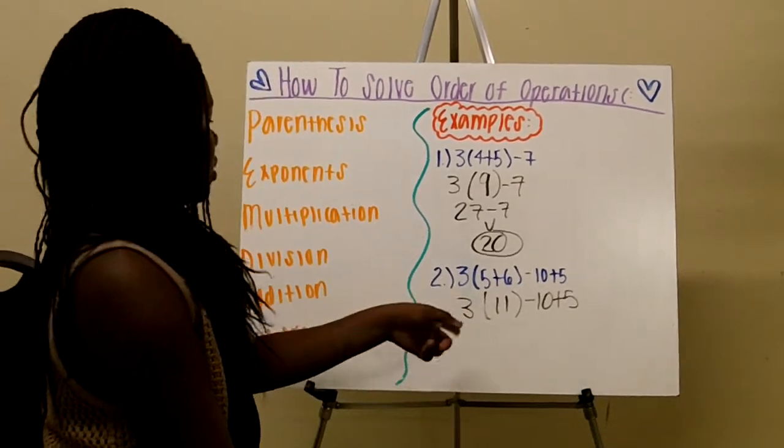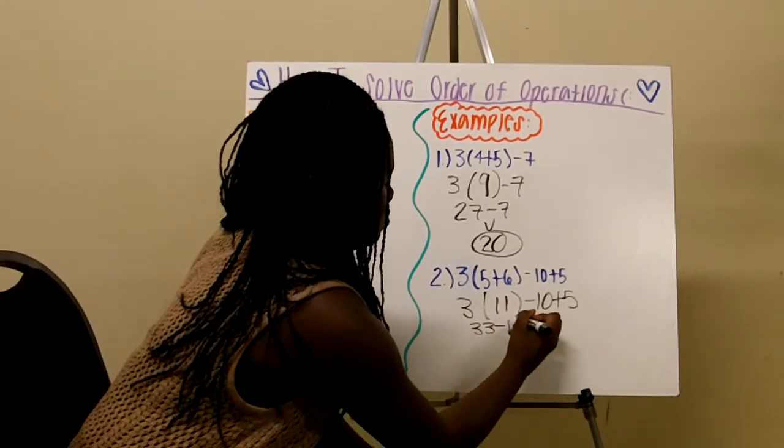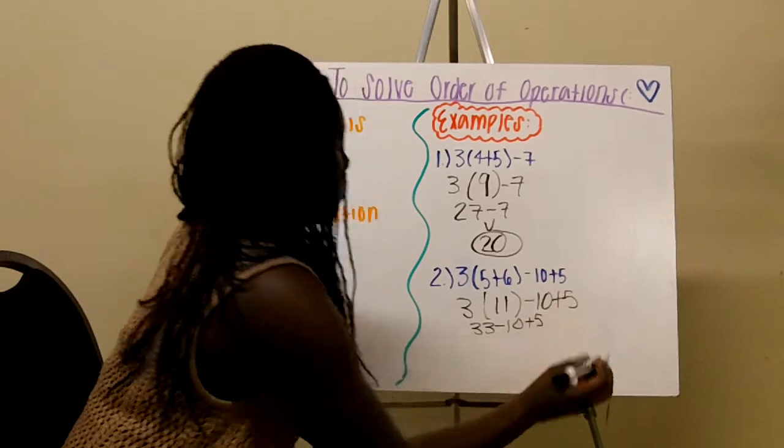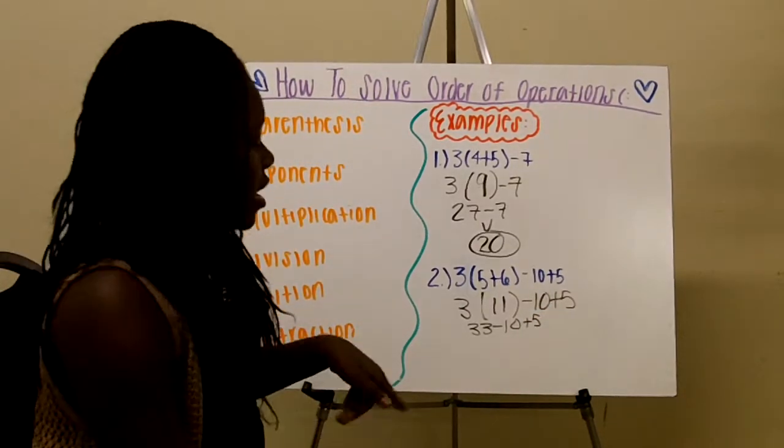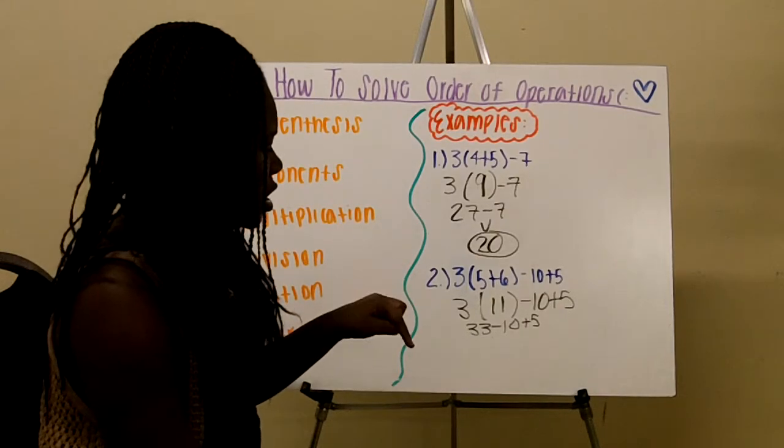So then we would do multiplication, so that would be 33 minus 10 plus 5. So now I'm going to do 33 minus 10.